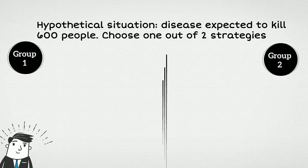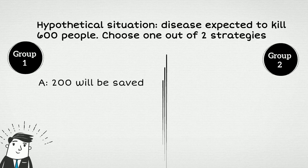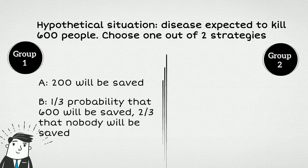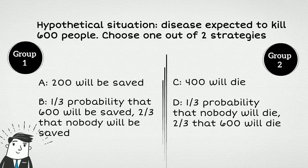The first group chose between strategy A and strategy B. Strategy A said 200 people will be saved and strategy B said there is a one-third probability that 600 people will be saved and two-thirds probability that no people will be saved. The second group chose between strategy C and strategy D. Strategy C said 400 people will die. Strategy D said there is a one-third probability that nobody will die and two-thirds probability that 600 people will die.